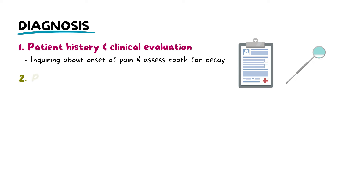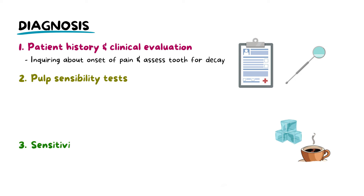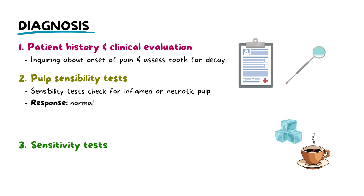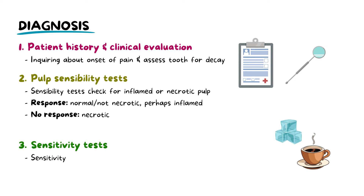Additional testing can include pulp sensibility testing as well as pulp sensitivity testing. Pulp sensibility tests, like CO2 tests or electronic pulp tests (EPTs), detect whether the pulp is necrotic or not — basically, if there is a response, then the tooth is normal and not necrotic. Pulp sensitivity, on the other hand, includes the assessment of tooth sensitivity to temperature changes.